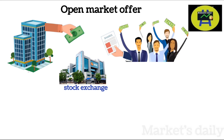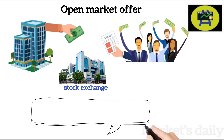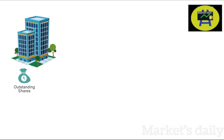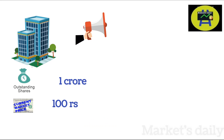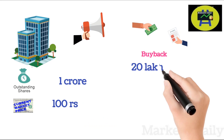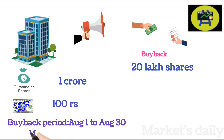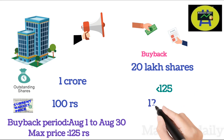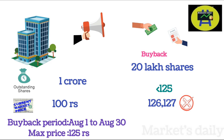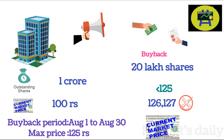I have pasted the link of the video in the description. In open market offer, if a buyback is announced, the company also mentions the buyback period and the maximum price at which the company will buy from its shareholders. For example, let's assume company X has a total of 1 crore shares, the current market price is 100 rupees, it has announced a buyback of 20 lakh shares, the period is from August 1st to October 30th, and they have set a maximum price of 125 rupees. If the share price goes beyond 125 rupees, say 126 or 127, then they don't buy. In simple words, they buy their shares at the current market price until their maximum price is reached.